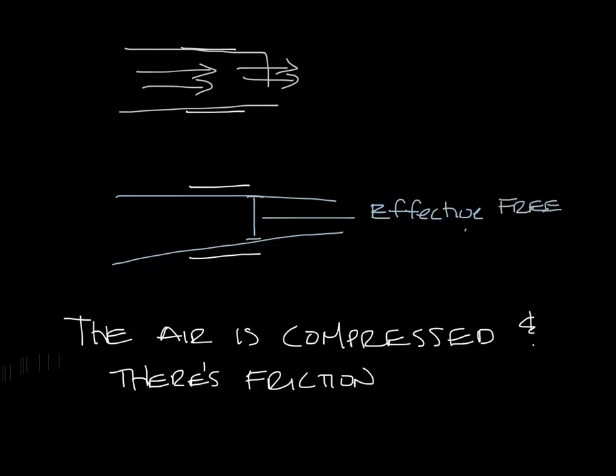So this is the effective free area. It's referred to as a sub k. So the equation becomes CFM equals a sub k times velocity. A sub k is something that the grill manufacturer has to calculate by measuring the airflow and face velocity in a lab.